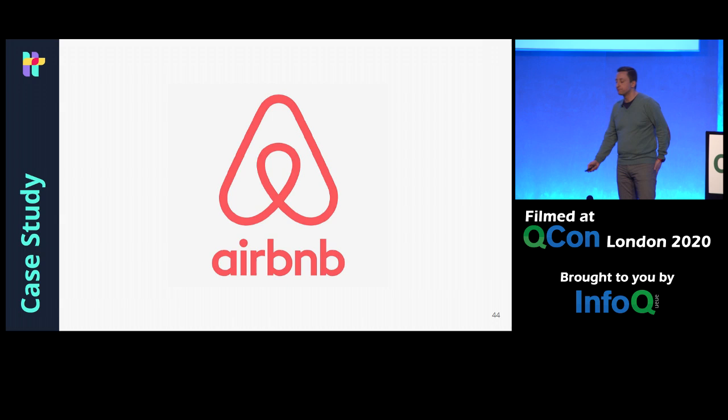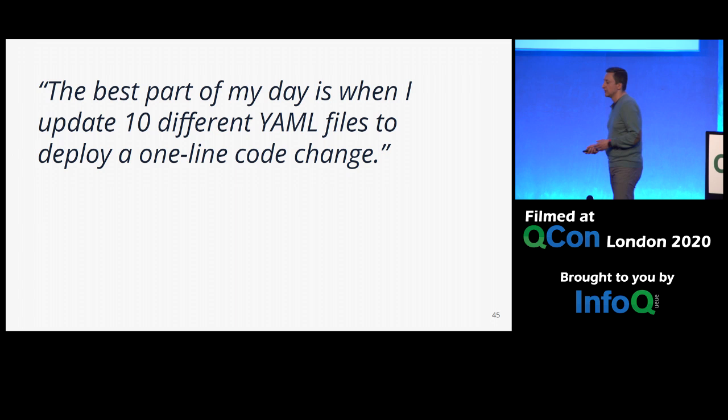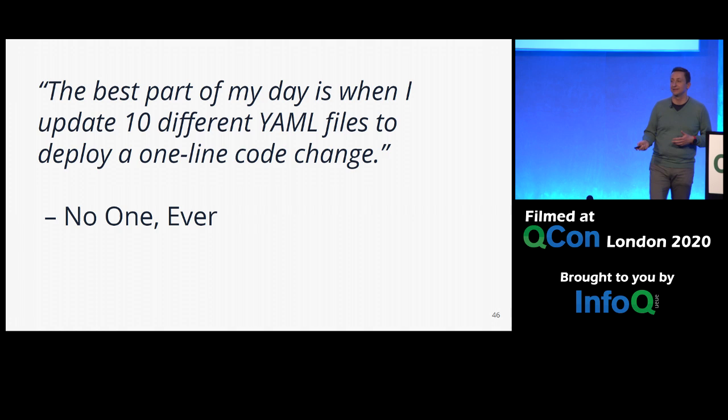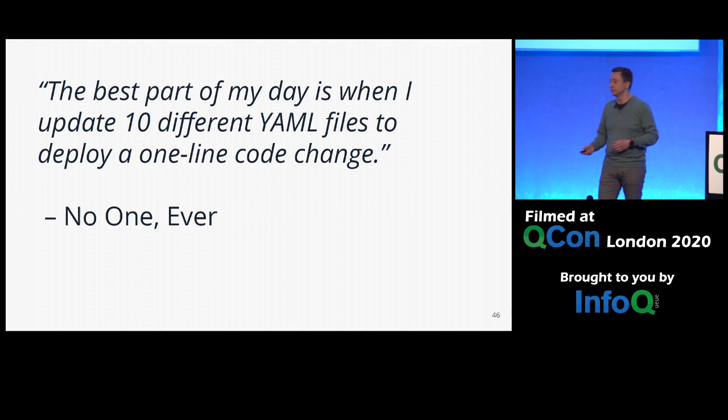Going back to the Airbnb example — how were they reducing the cognitive load on their development teams? There's this famous quote: 'The best part of my day is when I update 10 different YAML files to deploy a one-line code change.' Said no one ever. And so they were feeling this pain — some of their teams were feeling the pain of embarking on Kubernetes without help to reduce this cognitive load.